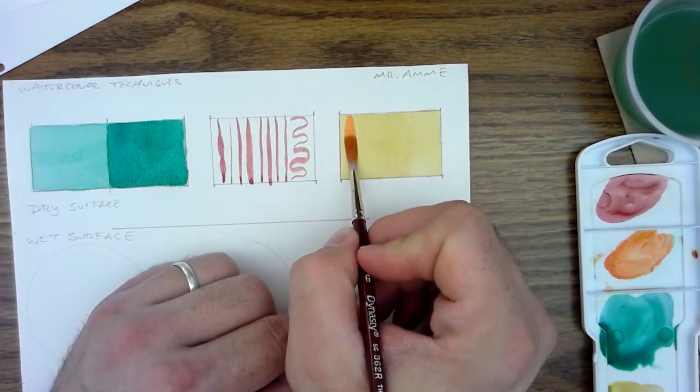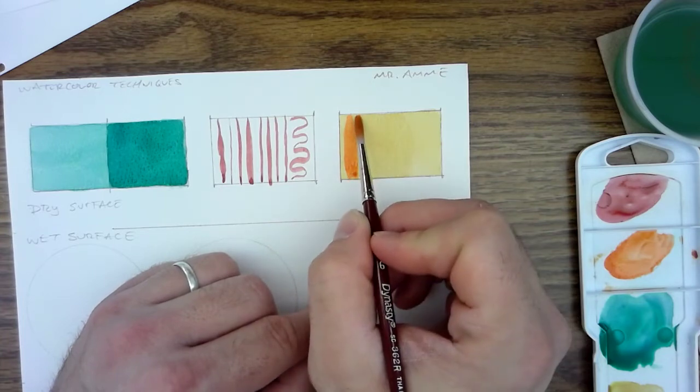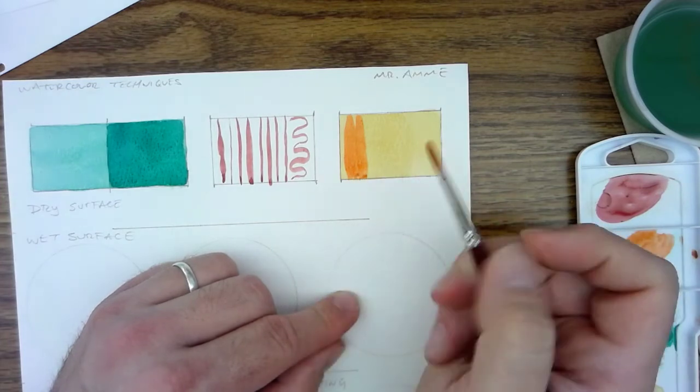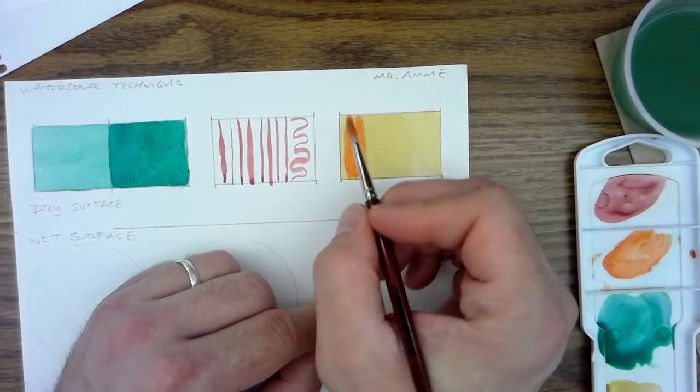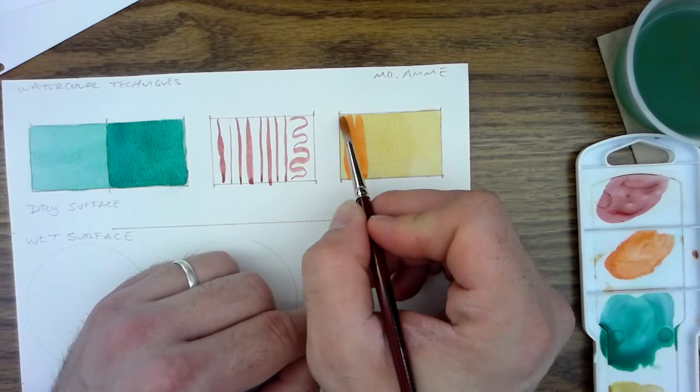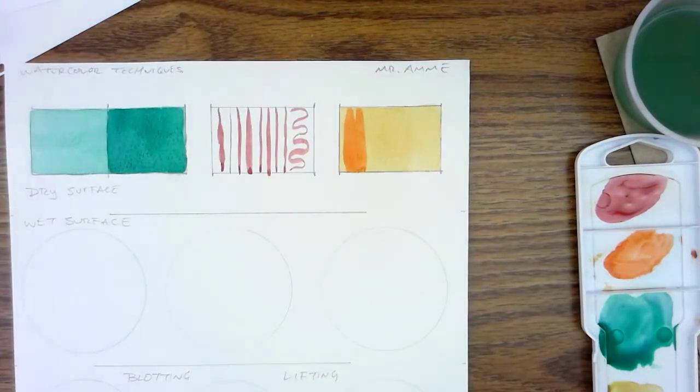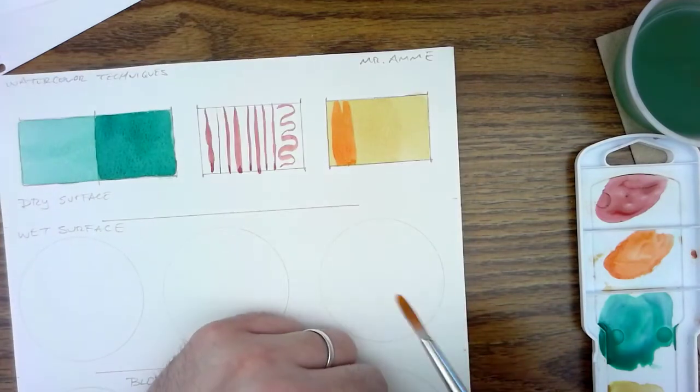So I'm just glazing. I can still see some of the color underneath. But I'm just adding that transparency of another color on top. And it's a similar color to the yellow brown that I used to mix up a yellow brown, and I'm creating the orange over top.